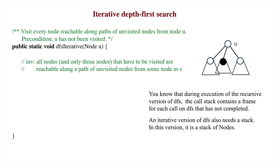Here's the invariant of the loop that we will write. All nodes, and only those nodes, that have to be visited are reachable along a path of unvisited nodes from some node in S. The bit about only those nodes is necessary. Without it, placing all nodes in the stack initially would truthify the invariant, even nodes, for example, that are not connected to U.